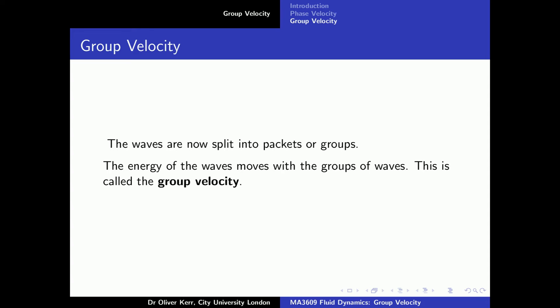Between the points where the waves have small amplitude, we can think of the waves as forming packets or groups. The energy of waves is related to their amplitude, so in between the packets there is a region of negligible energy. The energy is associated with the large waves and will move with the packets or groups of waves. The speed of the energy transmission is called the group velocity.